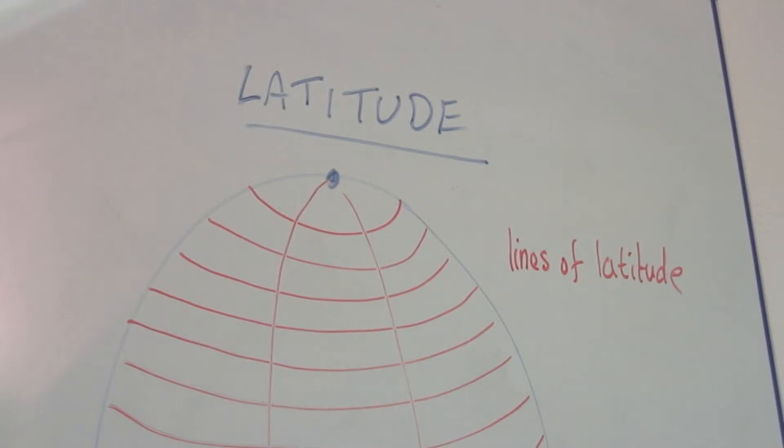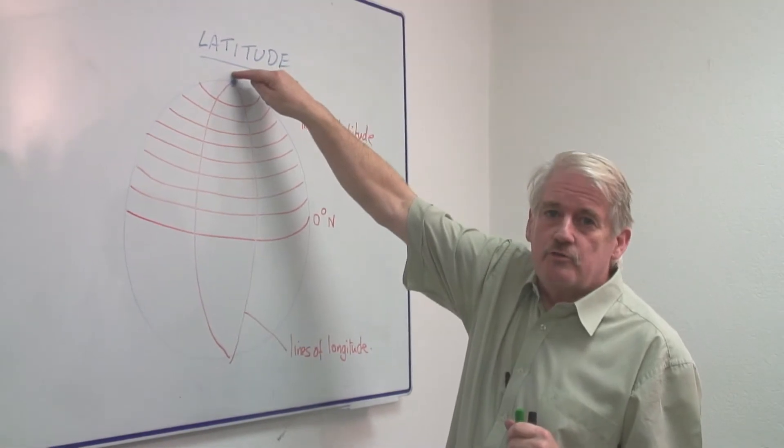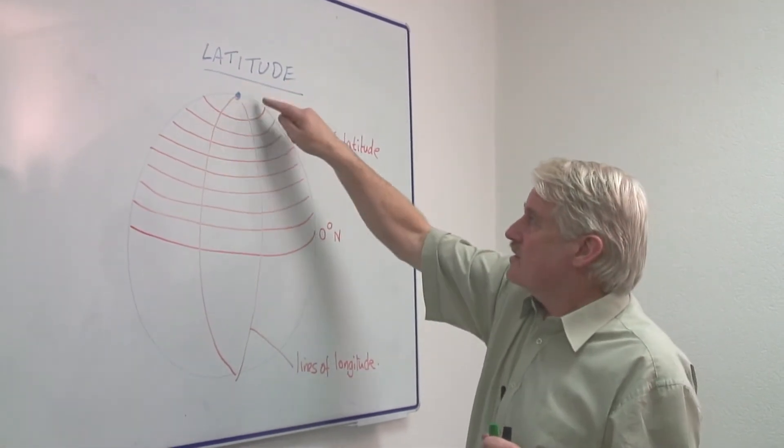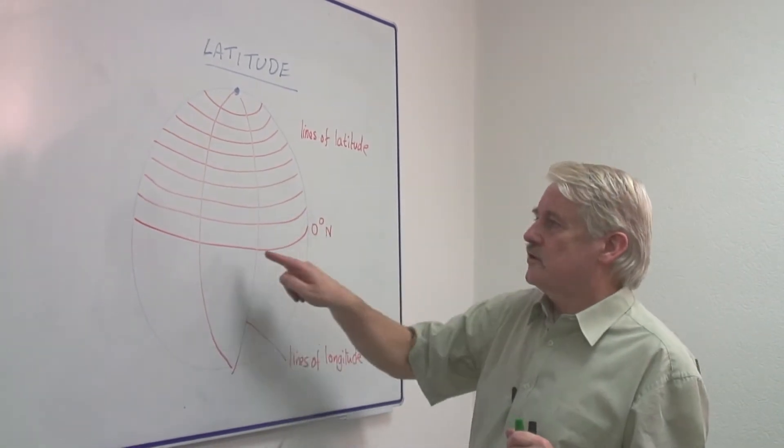So latitude are the lines which go around the earth, and at the top of the earth of course we talk about the north pole, and these are the lines that go in circles around the north pole. They are not great circle lines.